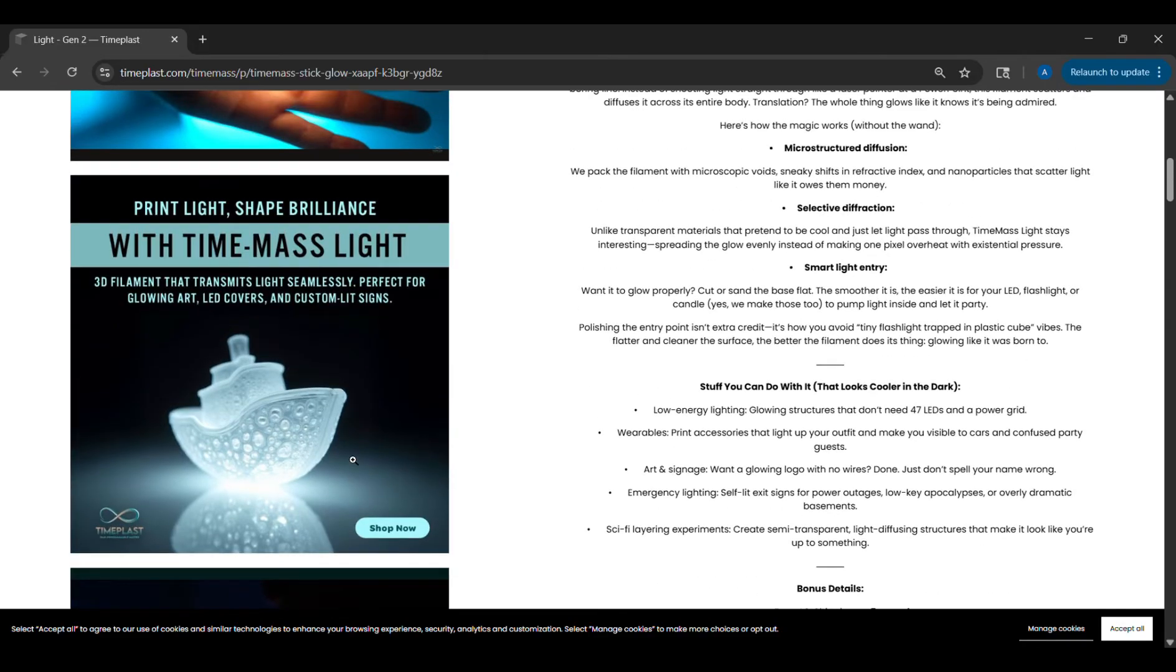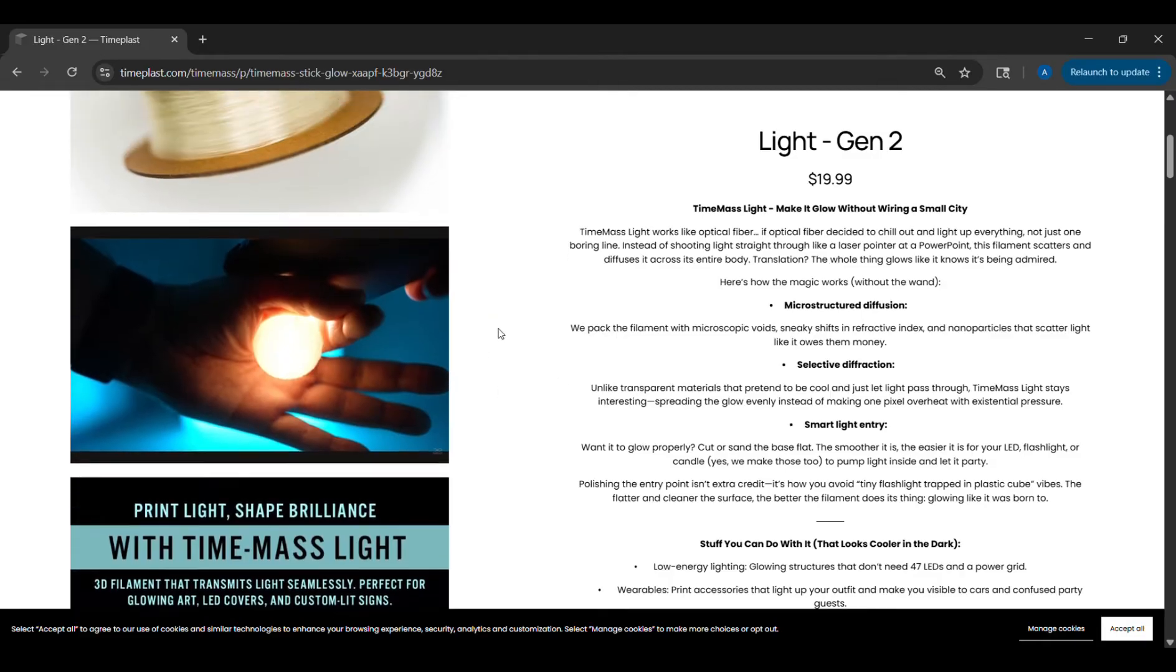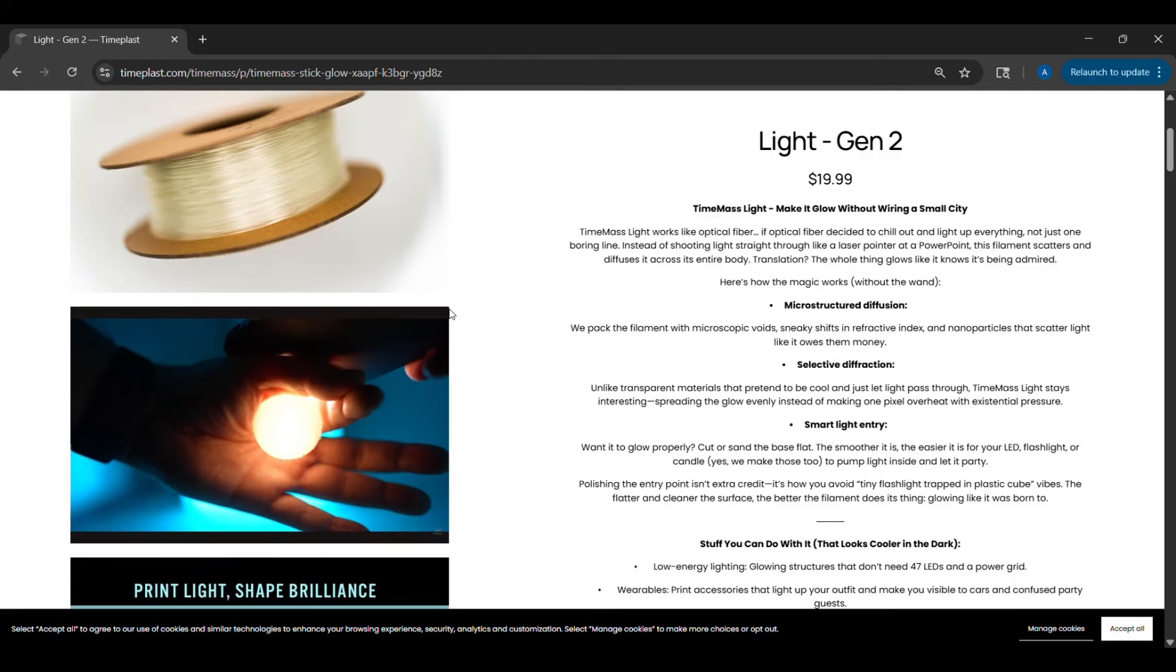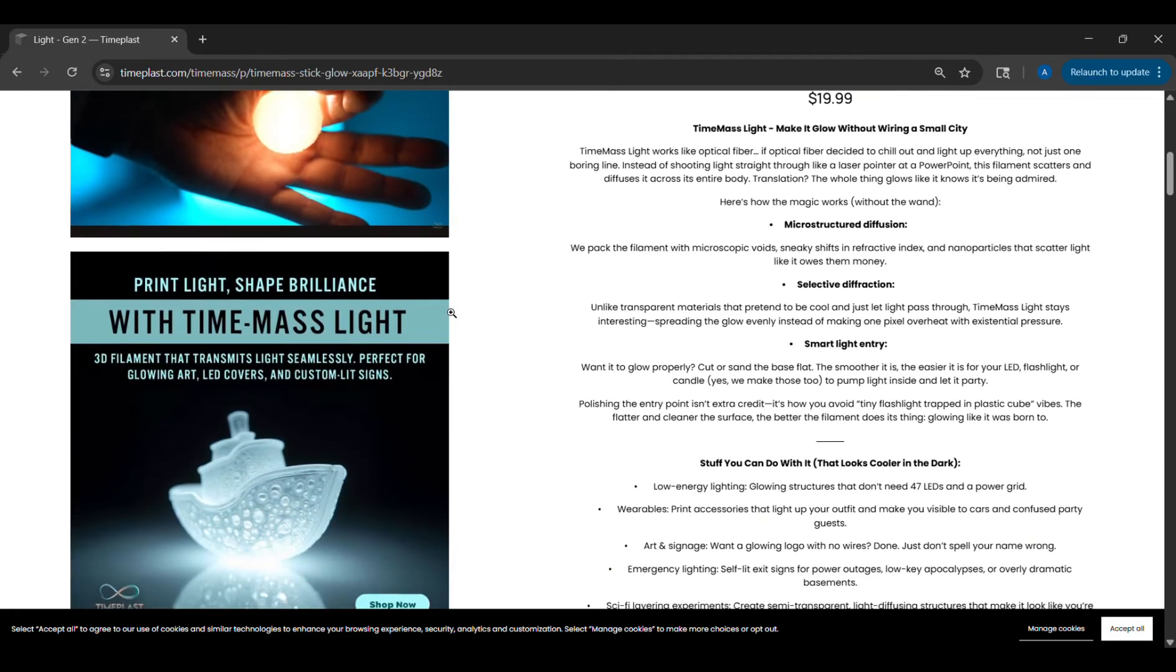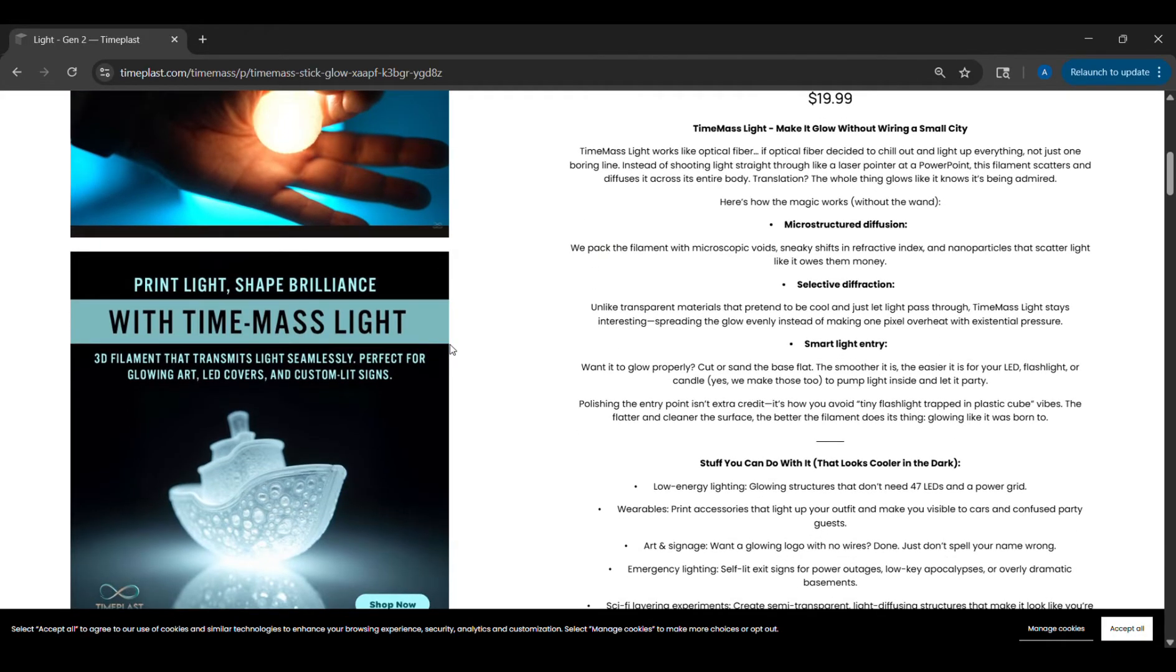So I bought this with hopes of creating some cosplay props where I would have LEDs behind it. I'm working on a Sting prop, the sword from Lord of the Rings and Hobbit that glows. So I was really hoping that this would work well to create a glowing effect where I'd have an LED in the blade and then I could use this as the blade structure.